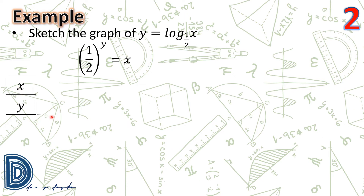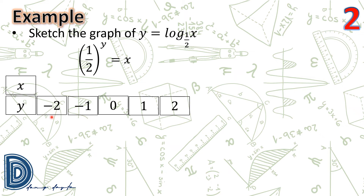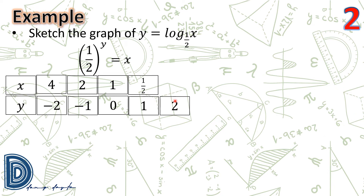Assign y-values of −2, −1, 0, 1, 2, then solve for x. If y = −2, then x = (1/2)^(−2) = 2^2 = 4. If y = −1, then x = 2. If y = 0, then x = 1. If y = 1, then x = 1/2. If y = 2, then x = 1/4.